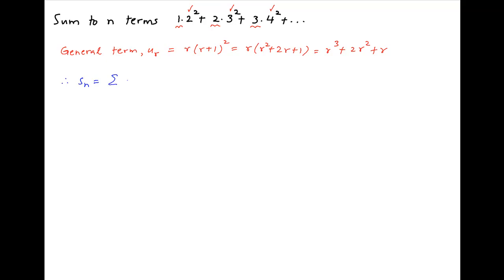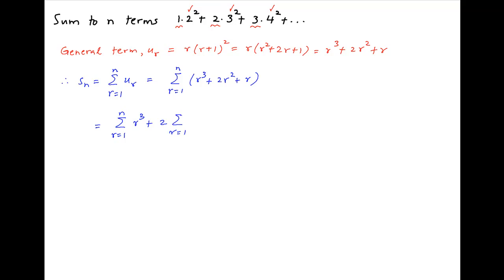Therefore, the sum to n terms of this series is equal to summation u_r, where r goes from 1 to n, which is equal to summation of r³ + 2r² + r, which is equal to summation r³ plus 2 times summation r² plus summation r, where r goes from 1 to n.